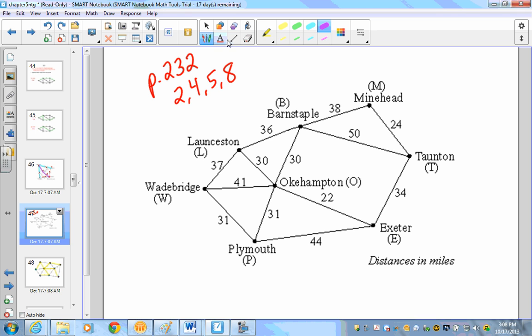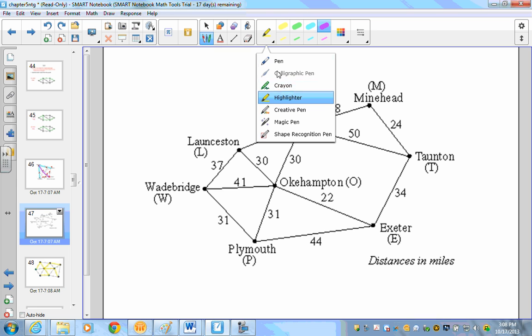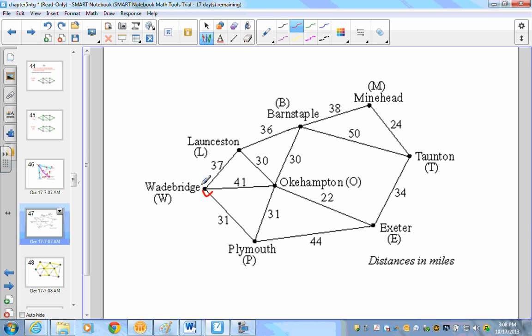Last one. At this point in time you should pretty much get this. Wade Bridge to Exeter. Once again you're going to investigate all the different routes. To get to Plymouth would be 31, so I'm going to highlight that. To Oak Hampton, I'm probably not pronouncing that right, is 41. I can't get there any faster, so that'd be 41.